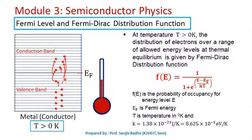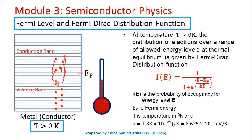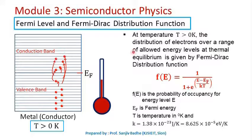As temperature increases, some electrons from lower energy levels gain energy and get excited to higher energy levels. At temperature T greater than 0 Kelvin, the probability of occupancy for energy levels below the Fermi energy level may not always be one, and the probability of occupancy for energy levels above the Fermi energy level may not always be zero.